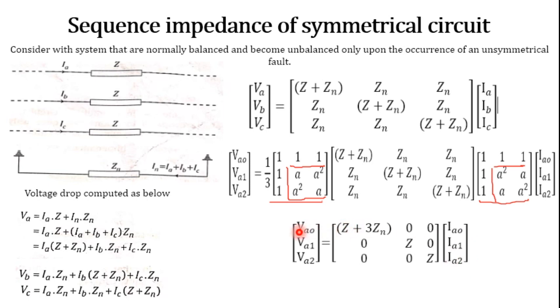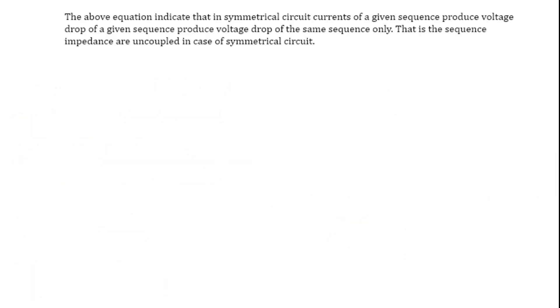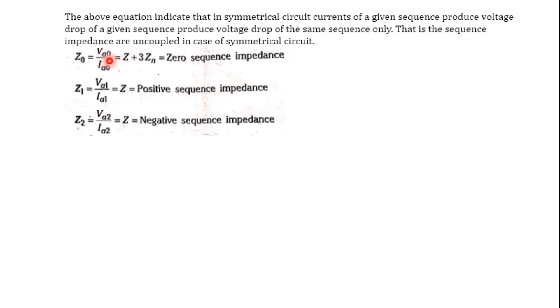The result indicates that Va0 equals Ia0 times (Z + 3Zn). This means that a symmetrical circuit with current of a given sequence produces a voltage drop of the same sequence only. The sequence impedances are uncoupled in the case of a symmetrical circuit. Va0 (zero sequence voltage) consists of only zero sequence current and impedance; positive sequence voltage consists of only positive sequence current and impedance.